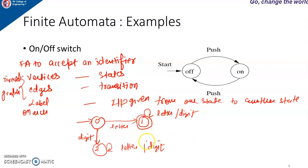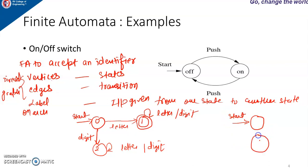This is the example of finite automata to accept an identifier. Always remember, when we design a finite automata there will be one start state and at least one final state. The start state is represented using a circle with an arrow and we write start here. The final state is represented using two circles. The machine is initially in start state 0. If the input is a letter, it is a valid identifier and the machine enters state 1. In this state, if the input contains any combination of letters and digits, the string will be accepted and the machine stays in state 1. The two circles represent the final state or accepting state of the finite automata.